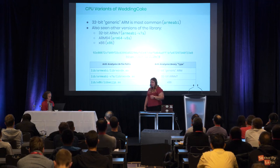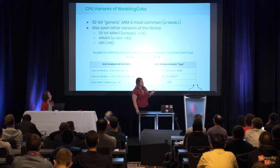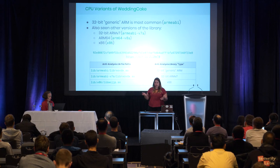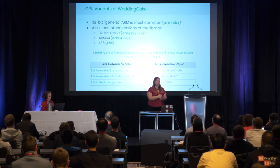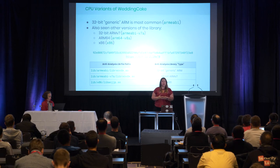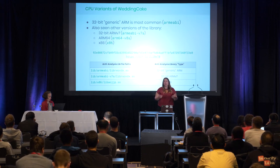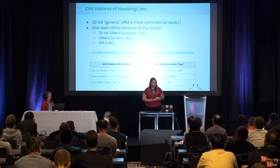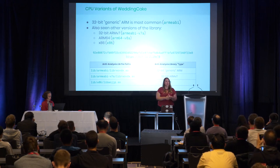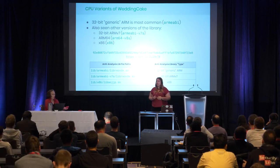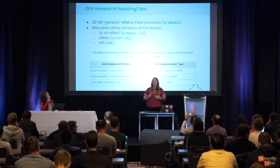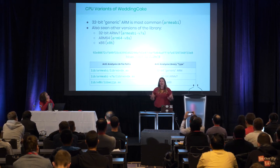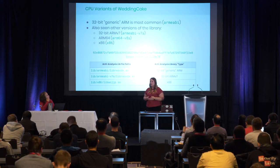An interesting feature of Wedding Cake is that it has been compiled for many different CPU variants, meaning it is very likely distributed as source code. The most common variant, which I will focus on today, is the ARM ABI version — 32-bit ARM. The other three I've seen in samples in the wild are 32-bit ARM v7, ARM64, and x86. Importantly, across all of the different CPU variants, it has the same functionality and techniques — they just compiled it for different CPUs.